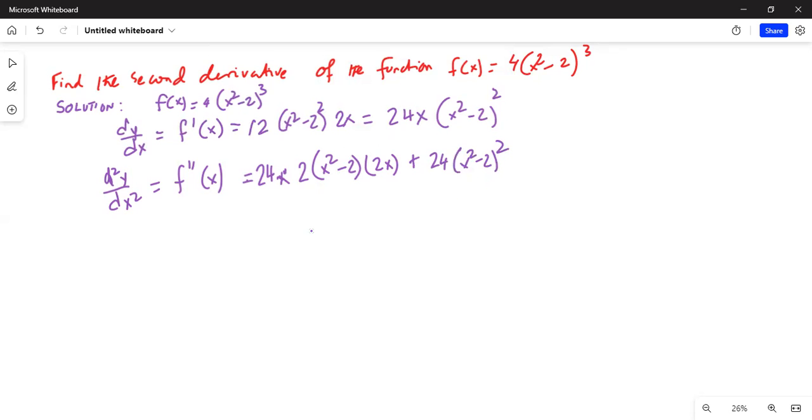So this is equal to... if I take out the common factor (x² - 2) outside, I'm left with 24 times 2 times 2x² plus...